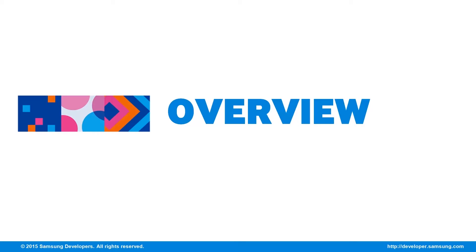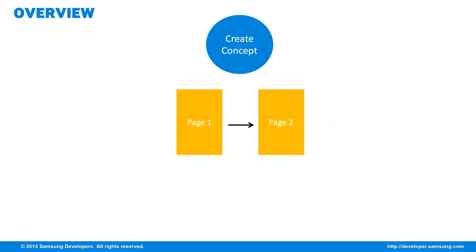Before we start with TAO, let us first refresh our memories with the typical web app development workflow. First, we need to define the app concept, the number of pages, and its contents. An example is creating a contact app with two pages: page 1 will contain the list of contacts, while the second page will contain the details of an element in the contact list.